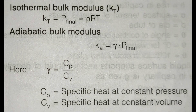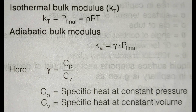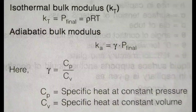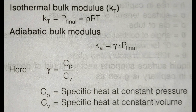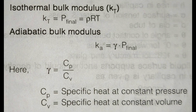The isothermal bulk modulus is Kt, where Kt equals rho times R times T. The adiabatic bulk modulus is Ka, where Ka equals gamma times P. Gamma is the ratio of specific heat at constant pressure to specific heat at constant volume, that is Cp divided by Cv.